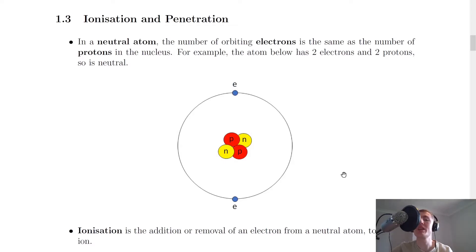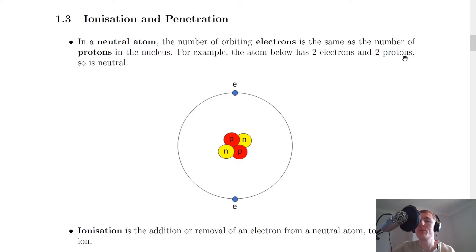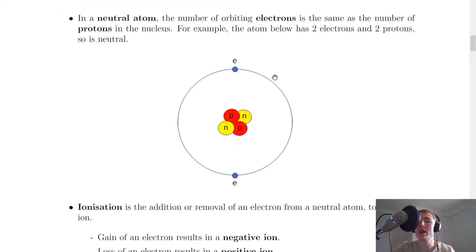We're going to start by looking at ionization — what it is and how each type of radiation can cause the ionization of an atom. In a neutral atom, the number of orbiting electrons is the same as the number of protons in the nucleus. For example, the atom below has two electrons and two protons, so it is neutral. In this picture we've got two protons and two electrons on the outside.